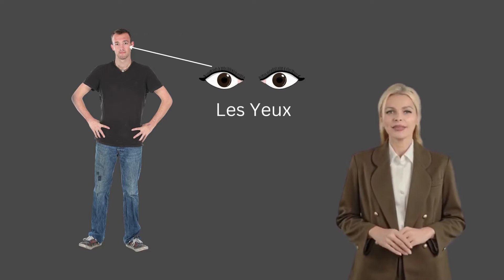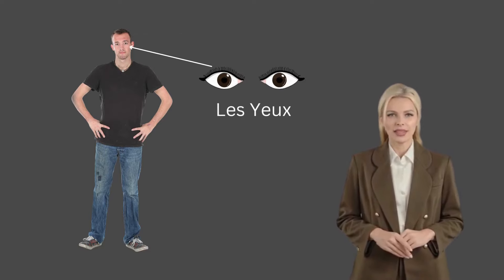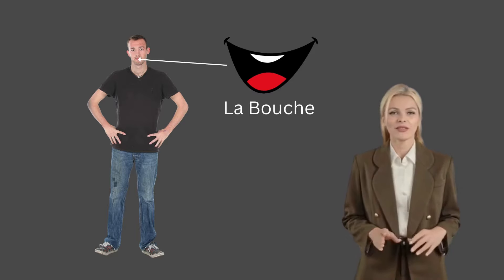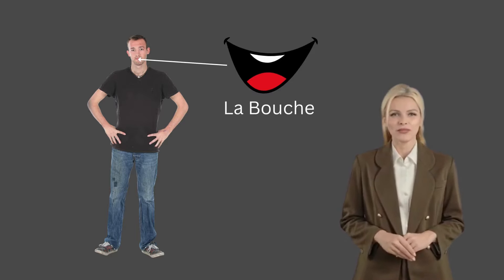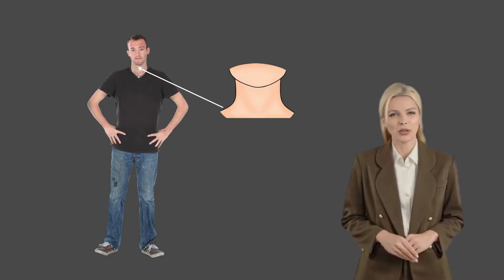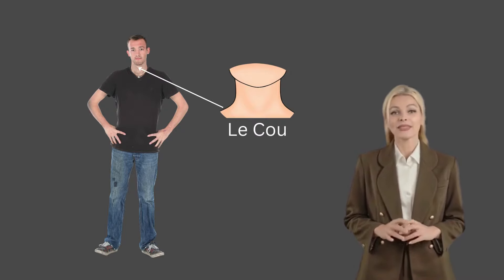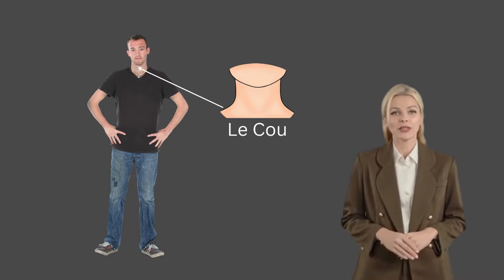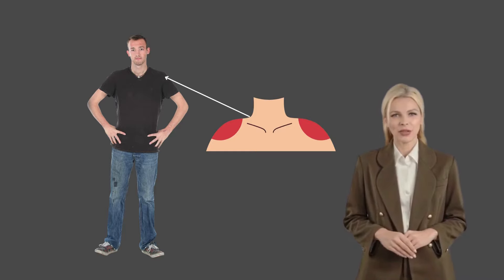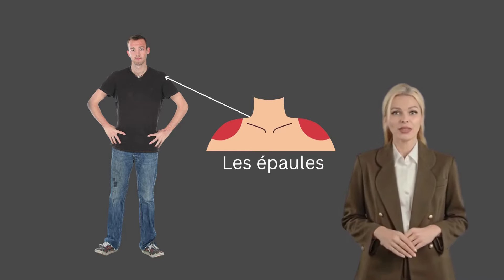The head in French is called la tête. The eyes are called les yeux. The mouth is called la bouche. The neck is called le cou.